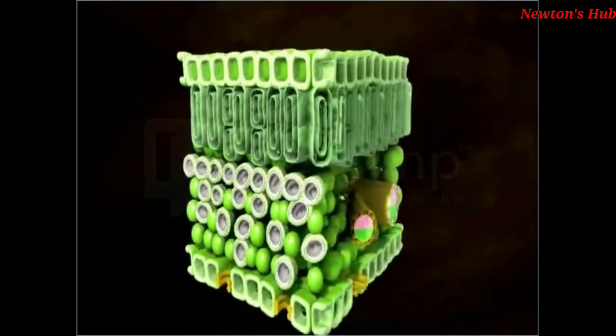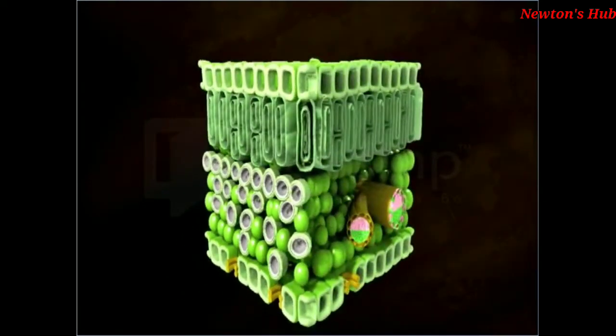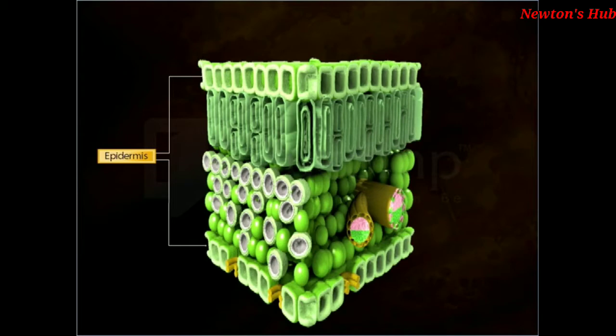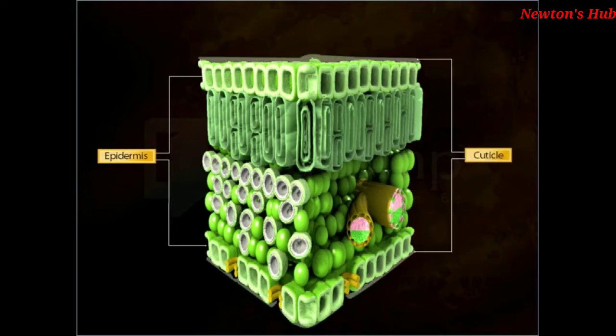Let's have a look at the internal structure of a leaf. The epidermal layers found on both the upper and lower surfaces of the leaf are made up of non-photosynthetic and transparent cells. They are covered with a waxy waterproof substance called cutin which forms a cuticle layer.